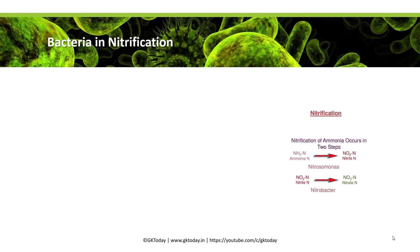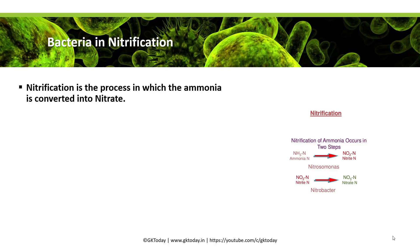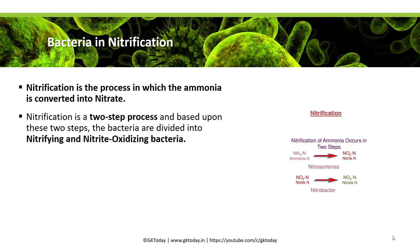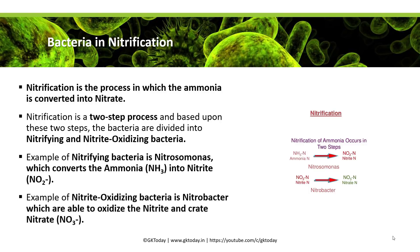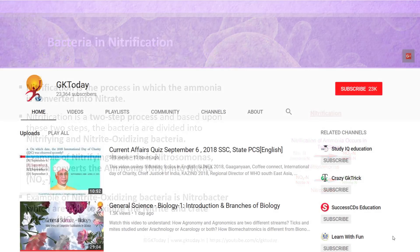Bacteria and nitrification: nitrification is a process by which ammonia is converted into nitrate. This is a two-step process, and based on these two steps the bacteria are divided into nitrifying and nitrite-oxidizing bacteria. An example of nitrifying bacteria is Nitrosomonas, which converts ammonia into nitrite. An example of nitrite-oxidizing bacteria is Nitrobacter, which oxidizes the nitrite to create nitrate.